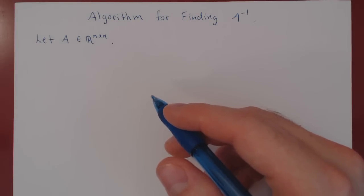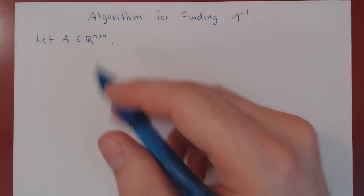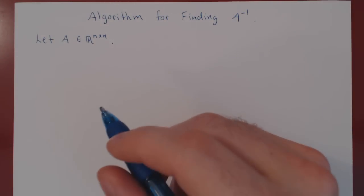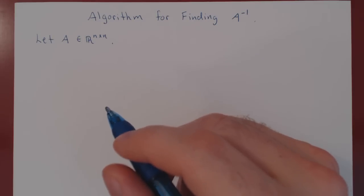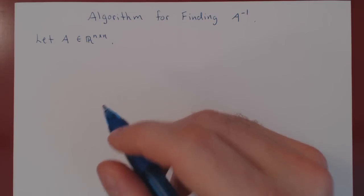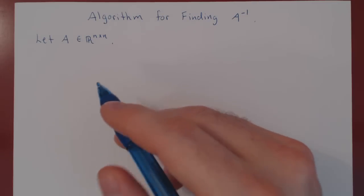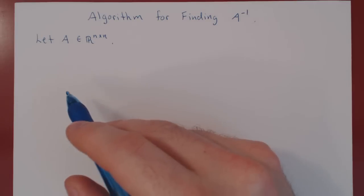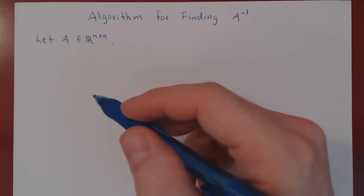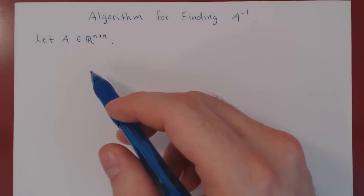If you remember our previous video, we discussed the inverse of a matrix and found a beautiful result for the inverse of a 2 by 2 matrix. The question is now, if a matrix is invertible — a square matrix of course — and it is larger than a 2 by 2 matrix, how do we find the inverse? Well, here's how we do it.